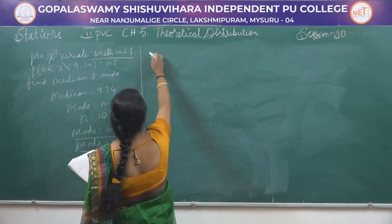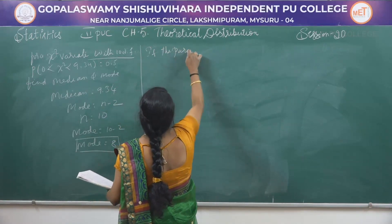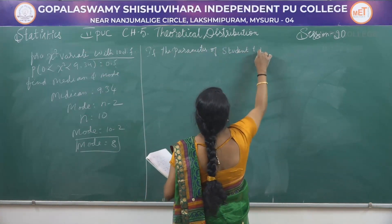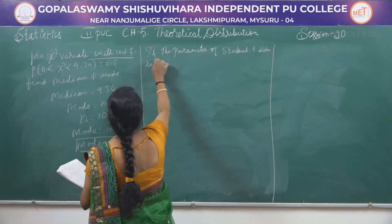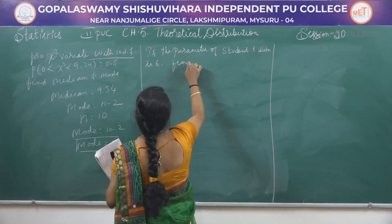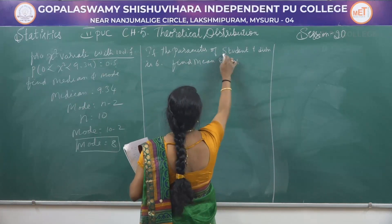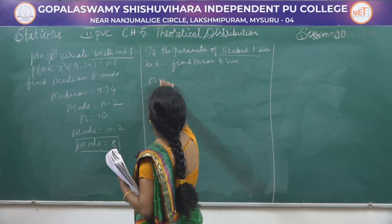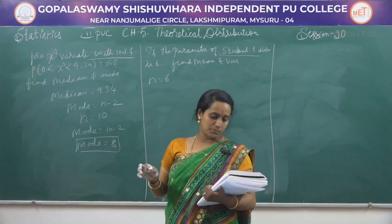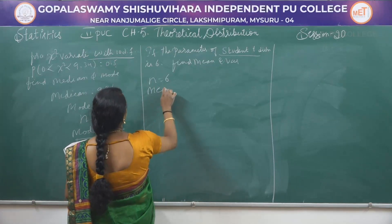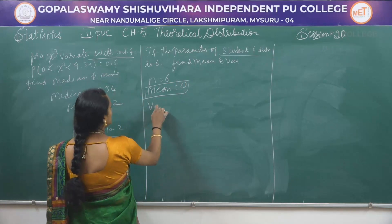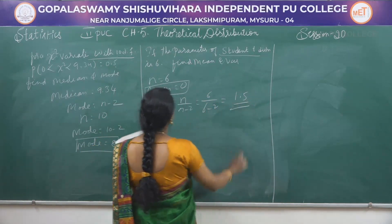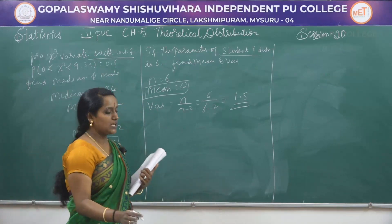Problem: If the parameter of a student t-distribution is 6, find mean and variance. Here n = 6. In t-distribution, mean = 0. Variance = n / (n − 2) = 6 / (6 − 2) = 6 / 4 = 1.5.